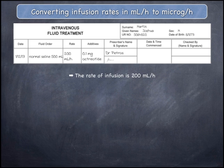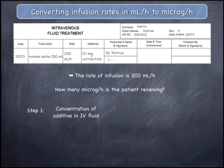As you will see, this has no bearing on the calculation itself. What rate of infusion in micrograms per hour is being delivered? This calculation should be undertaken in a series of steps in order to simplify it. In the first step, calculate the concentration of the octreotide additive in the IV fluid.